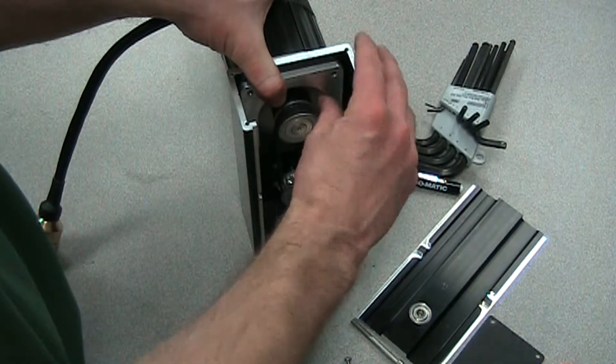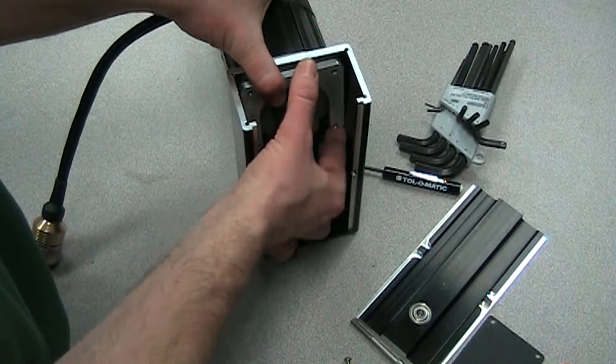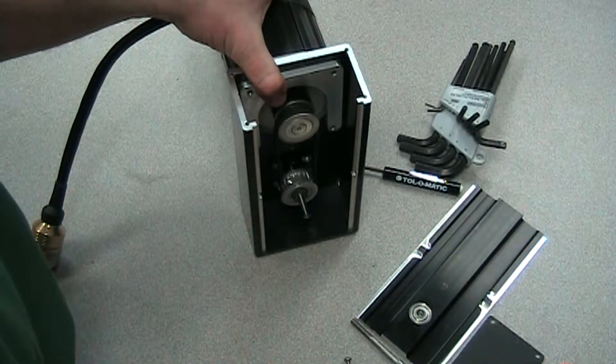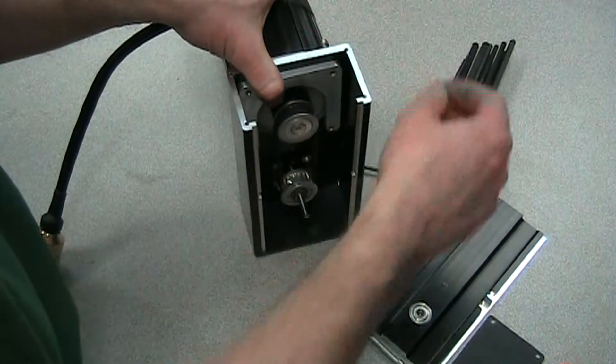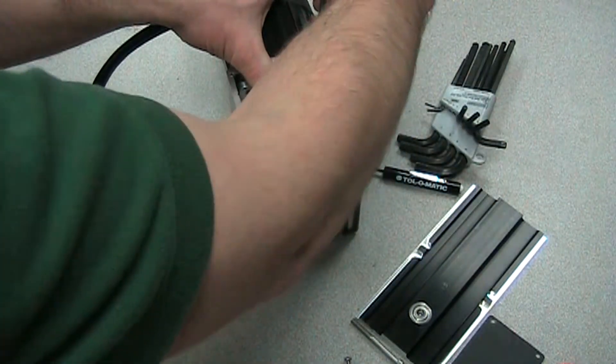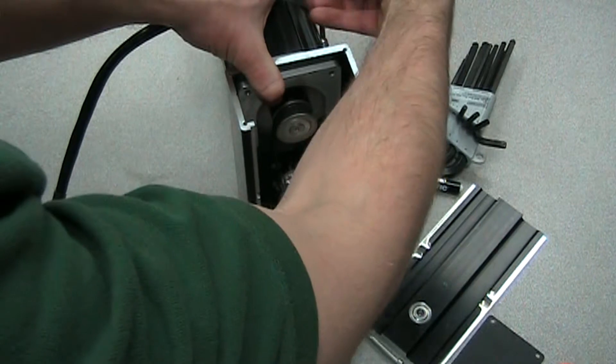So once we have that in place, we can put in the plate that goes behind this. This is a threaded plate with four threaded holes in it that will feed the screws through the motor, through the actuator housing, and into that plate.